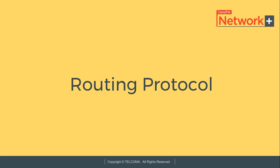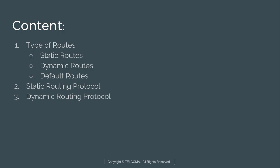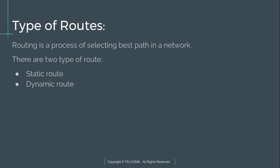Today we are going to discuss routing protocols. We will learn about the types of routes — static route, dynamic route, and default routes — and their protocols like static routing protocol and dynamic routing protocol. Routing is a process of selecting the best path in a network, and selection of the path is done on the basis of minimum hop count or the cost of transmission of each link. Based on this, there are two types of routes: static route and dynamic route.